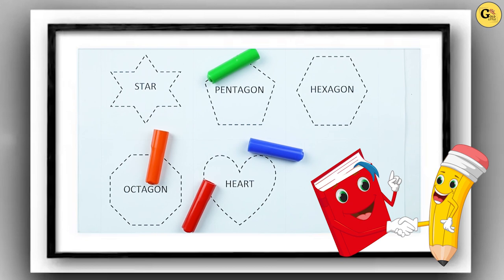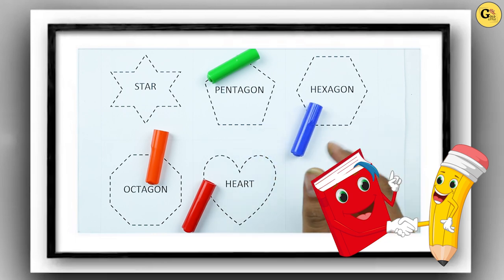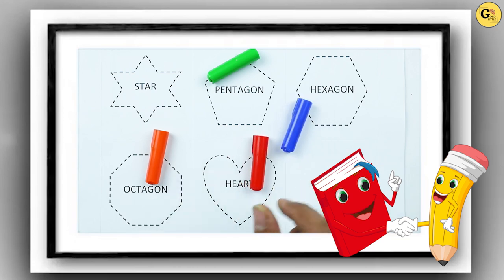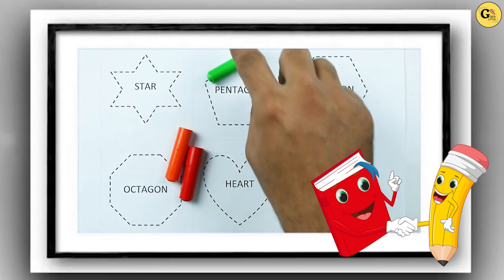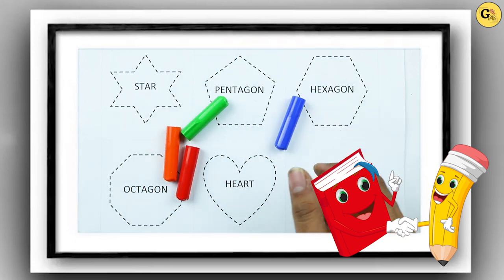Hello friends, today we learn shapes: star, pentagon, hexagon, octagon and heart with colors. Blue color, orange color, red color, green color.